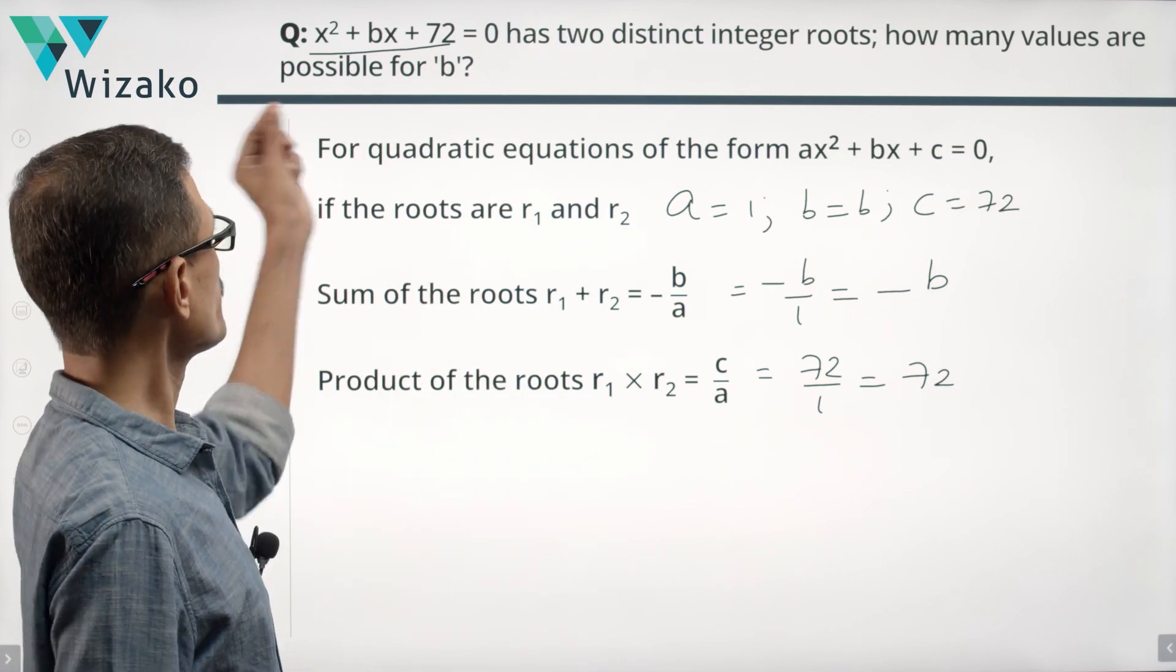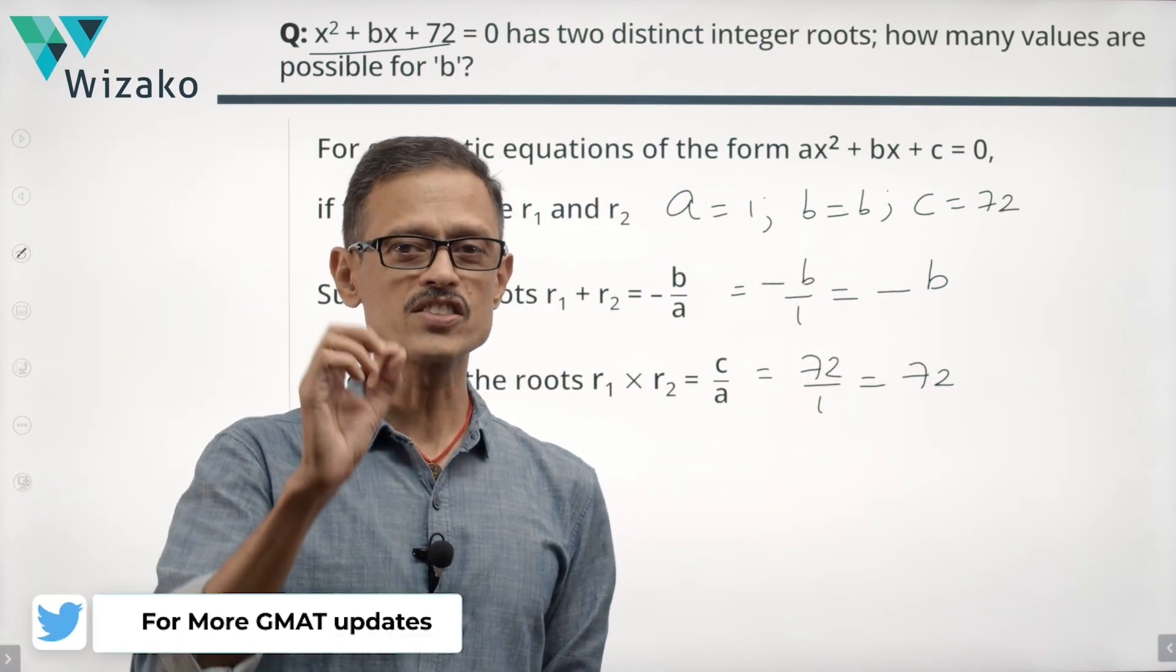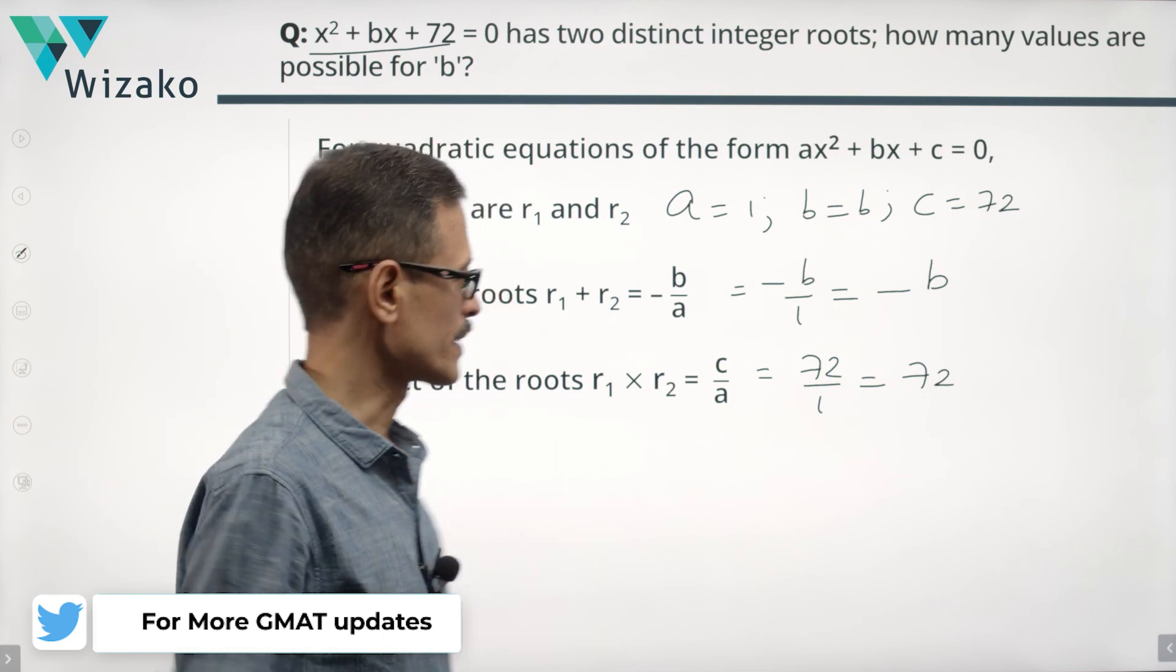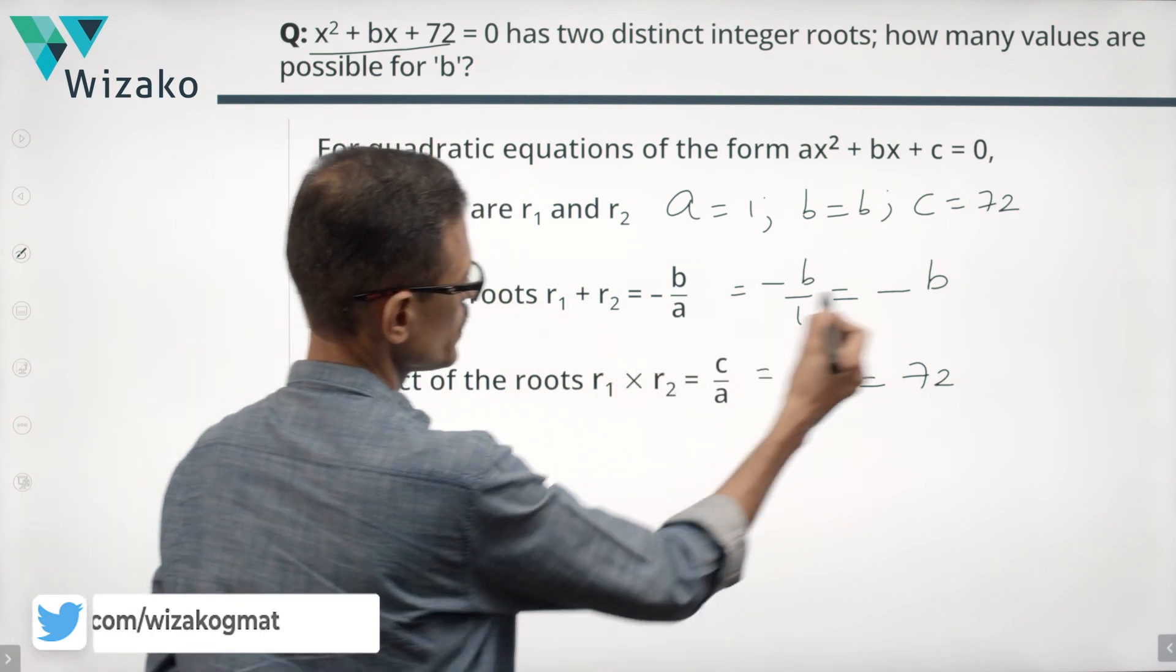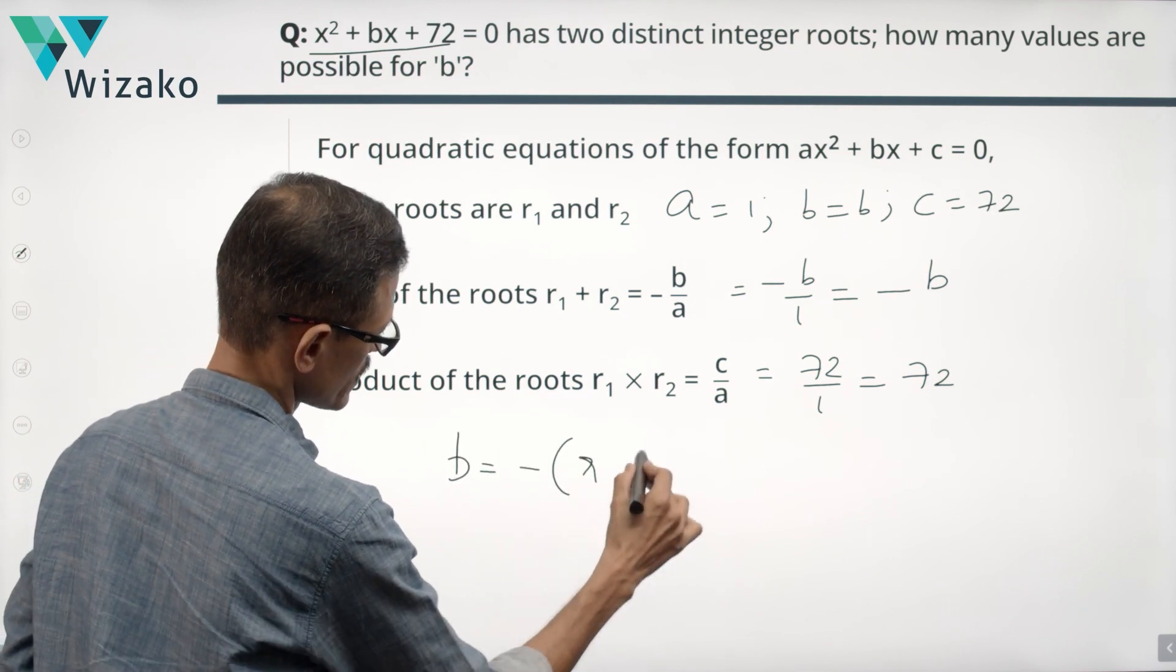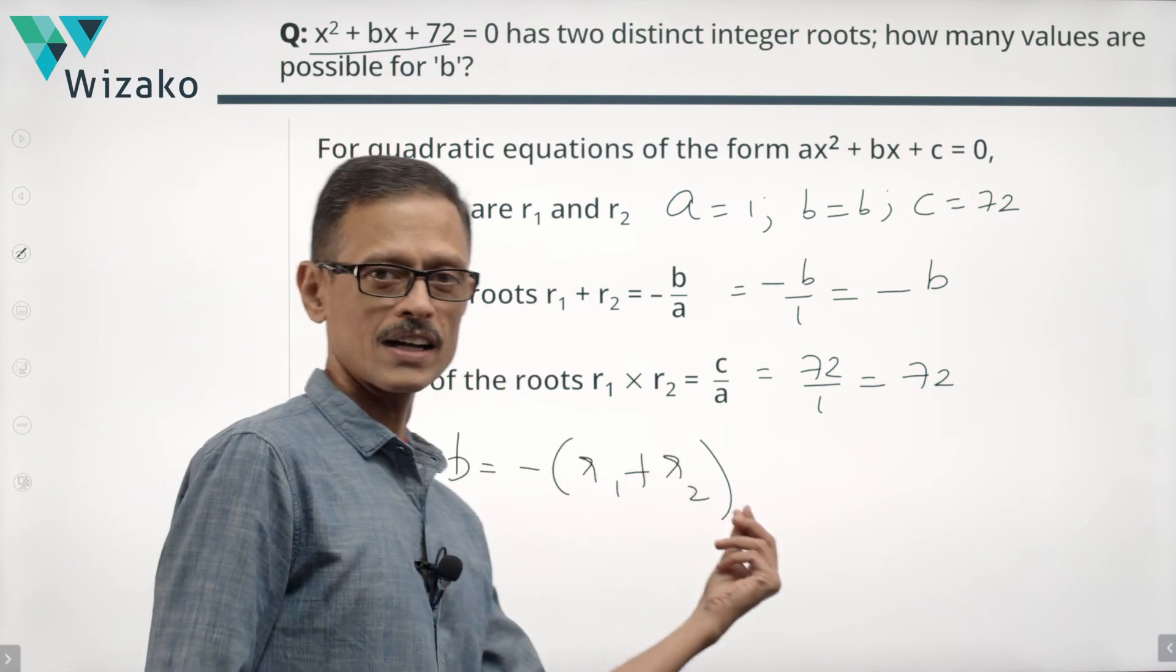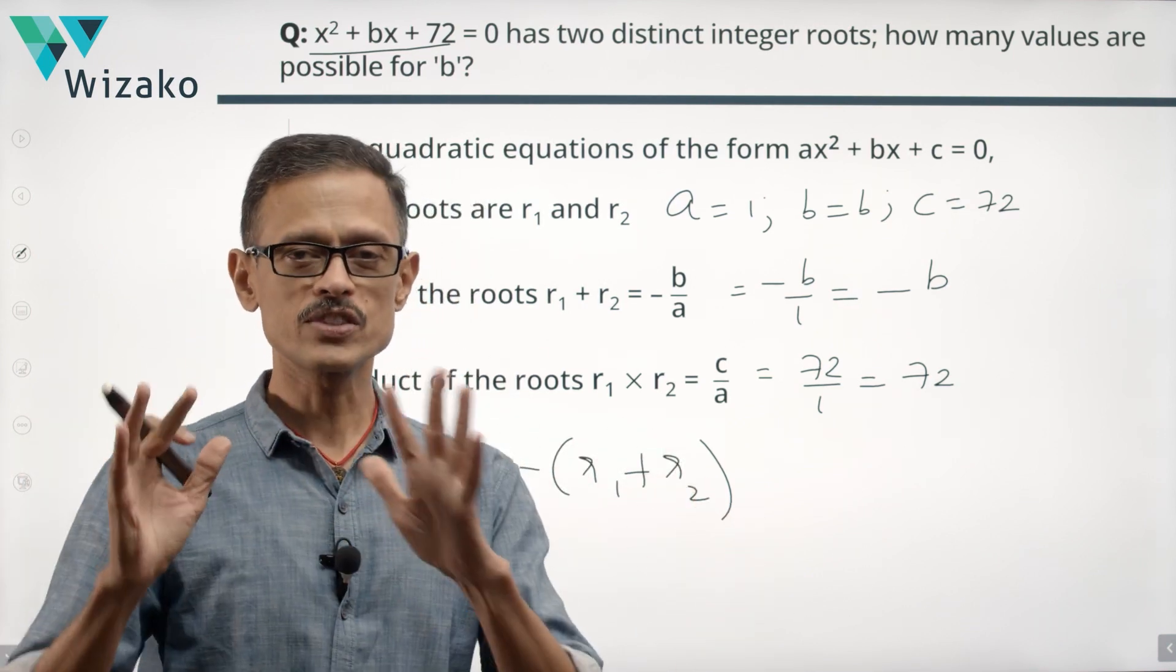The question is asking us to find out how many values can B take given the fact that R1 and R2 are distinct integers. So R1 plus R2 equals minus B, which means B can be written as minus of R1 plus R2. So however many values R1 plus R2 can take, so many different values can B take.